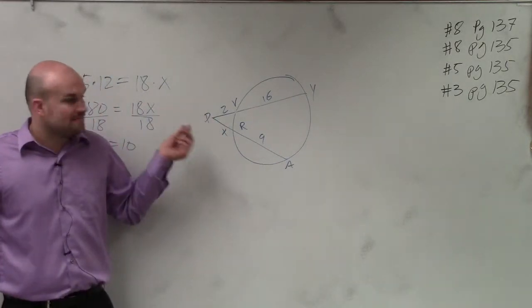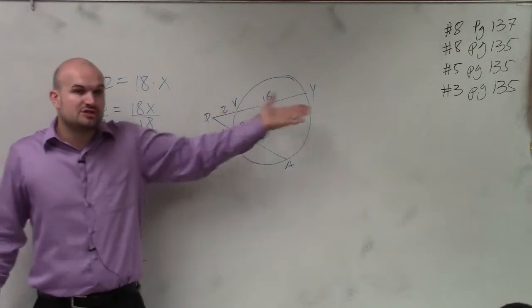Here, we're talking about two secant lines, right? We're talking about from a point that produces two secant lines.